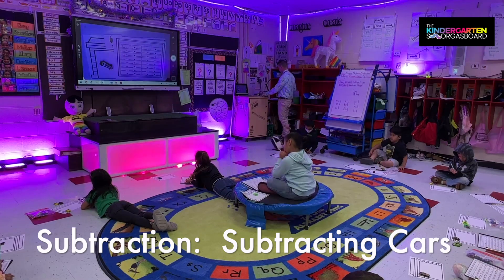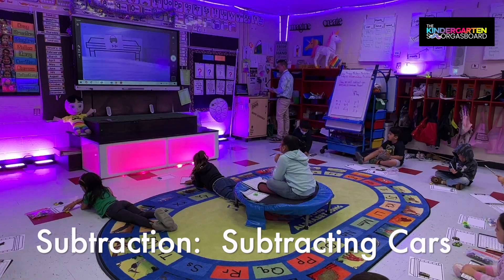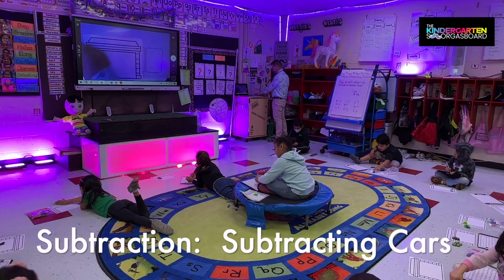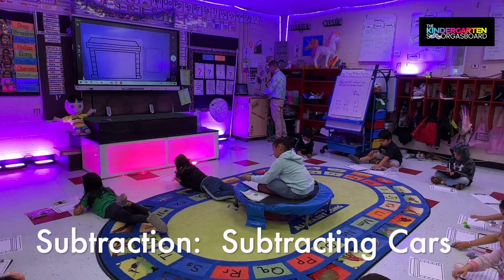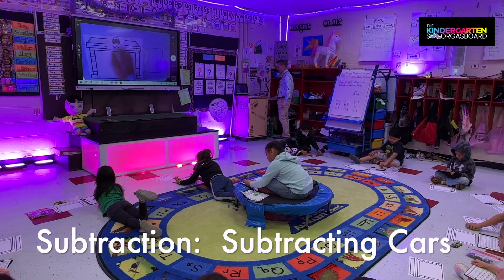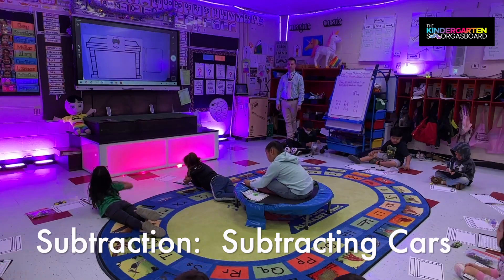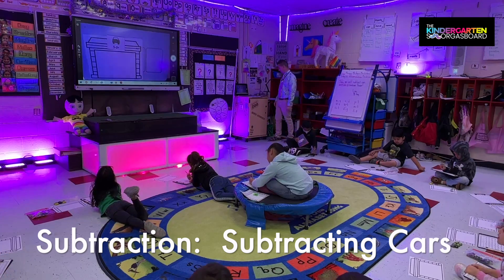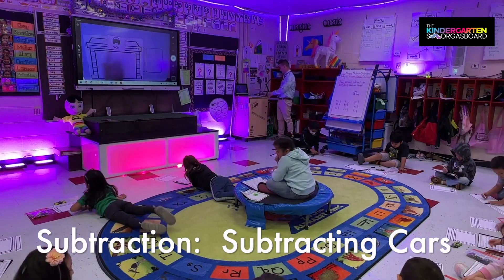Very good. So how do we subtract? Take away. All right, excellent. Take your cars out. Here's your next equation. Let's read it. Five minus two equals. All right, so how many cars do we need? Five.